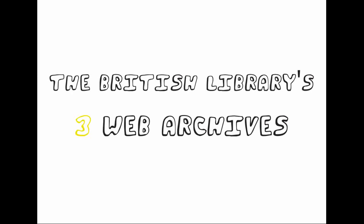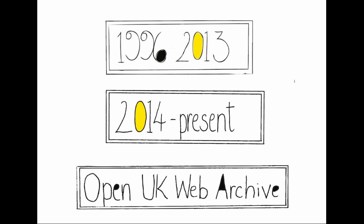The British Library has not one but three web archives. To make things more complicated, access is different for each. This video will explain what you can find in each archive and how to get to it.